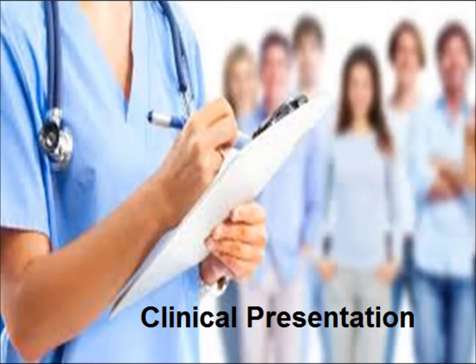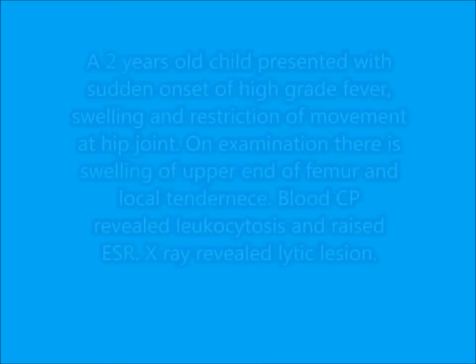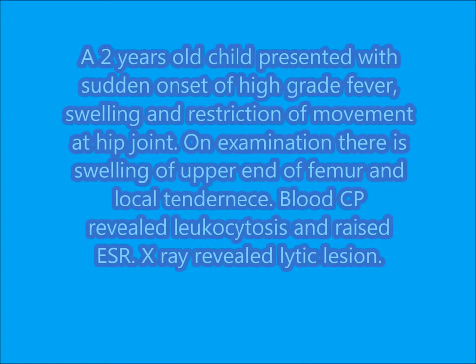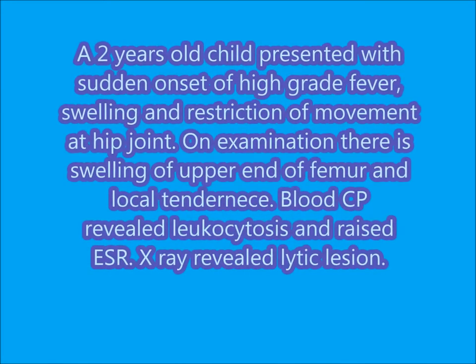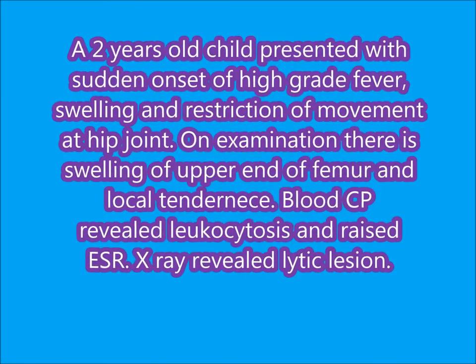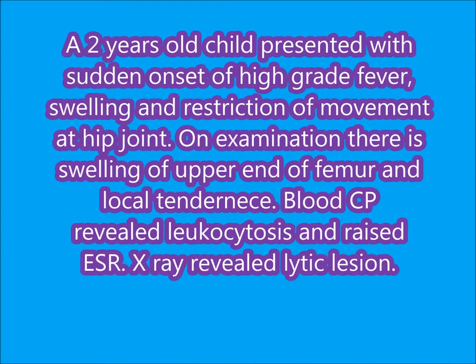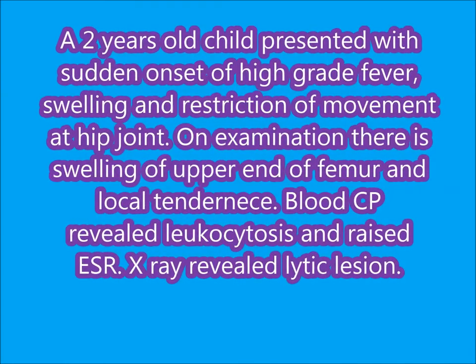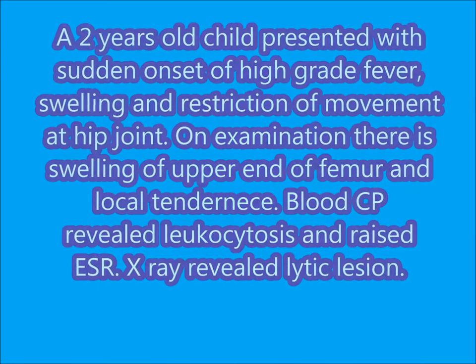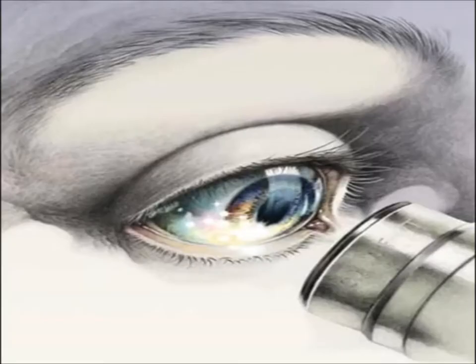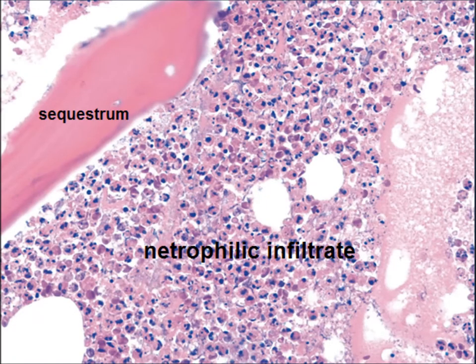Now the clinical presentation — how the patient presents when he or she has osteomyelitis. A 2-year-old child presented with sudden onset of high-grade fever, swelling, and restriction of movement at the hip joint. On examination, there is swelling of the upper end of the femur and local tenderness. Blood CP revealed leukocytosis and raised ESR; X-ray revealed a lytic lesion. On microscopic examination, there is presence of neutrophilic infiltrate and sequestrum.